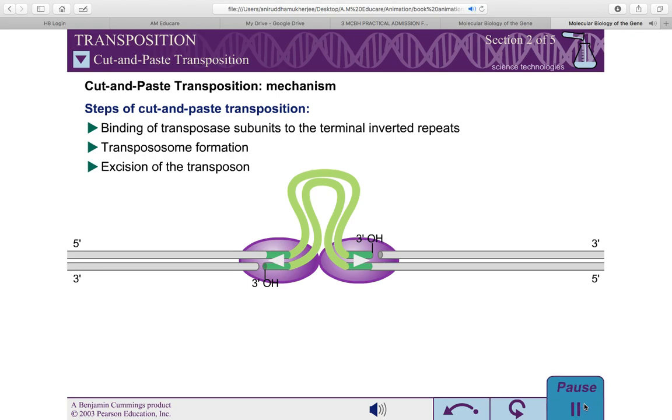To finish the excision reaction, the other DNA strand at each end of the transposon must also be cleaved. Different transposons use different mechanisms to cleave these second DNA strands. For some transposons, an enzyme other than transposase directly cleaves these strands.